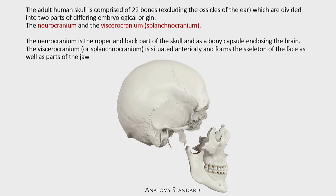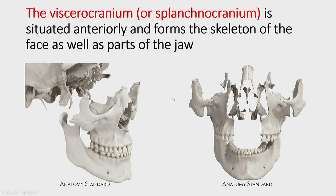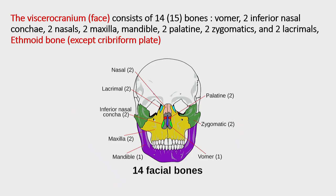The previous lecture with Professor Ferda was about the neurocranium. You know that the skull is divided into two main parts. The upper and posterior part is the neurocranium, which encloses the brain — that is why the name arises from that. The lower and anterior part is the splanchnocranium or viscerocranium, situated anteriorly and inferiorly, making the face part of the skull as well as the jaw. For the viscerocranium or face region, you have 14 or 15 bones.